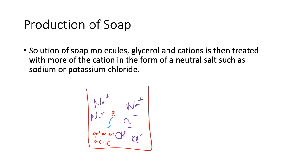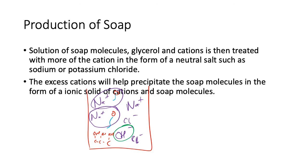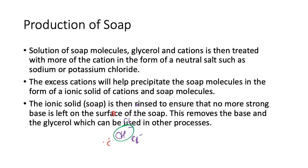These will combine to form a solid substance. The soaps will form solids with these sodium ions, and then you can filter out those, but then you have to rinse it because one of those things in there is dangerous—the base. So you keep on rinsing it with a little bit of water. The excess cations will be precipitated to the soap molecules—that's the excess sodium ions forming an ionic solid of cations and soap molecules, whereas everything else gets rinsed and reused somewhere else. The ionic solid soap is then rinsed to get rid of no more strong bases left on the surface. This removes the base and the glycerol, which can be used in other processes and therefore not waste everything.